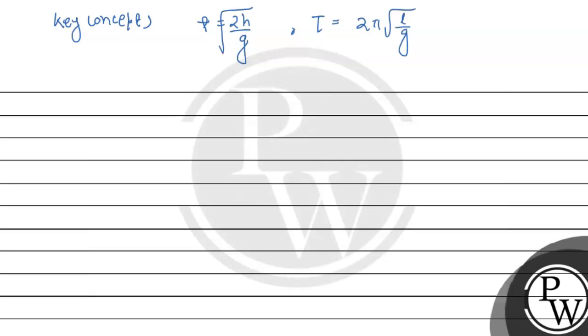For a freely falling body, using s equals ut plus half gt squared, since initial velocity u is zero, s equals half gt squared. This gives us the time of fall formula.